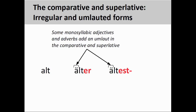A small number of monosyllabic adjectives and adverbs add an umlaut to their comparative and superlative forms. As you see on the screen, the adjective 'alt,' or 'old' in English, adds an umlaut in the comparative and superlative. Not all adjectives and adverbs do this, however, so please consult your textbook or conduct a web search to locate a complete list of those that take an umlaut. Additionally, you will note that the adjective ends in a 't,' so an 'e' must be inserted between the adjective and its superlative suffix.